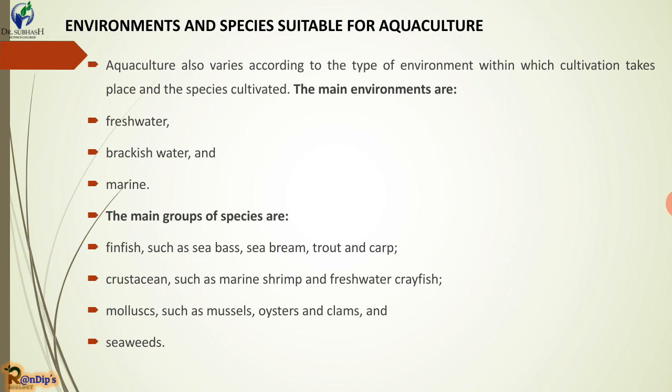Crustaceans such as marine shrimp and freshwater crabfish. Molluscs such as mussels, oysters, and clams, and seaweed. So here we have four groups: fin fish, crustaceans, molluscs, and seaweed.